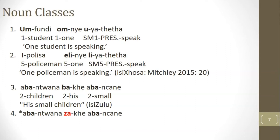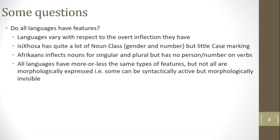Do all languages have features? Languages vary quite a lot with respect to overt inflection. isiZulu has a lot of noun class and gender-number marking but very little case marking. Afrikaans inflects nouns for singular and plural but has no personal number marking on verbs. Norwegian, depending on dialect, has two or three genders but very simple finite or non-finite verb marking. It appears that all languages have more or less the same types of features, but not all are morphologically expressed — some may be syntactically active but morphologically invisible.